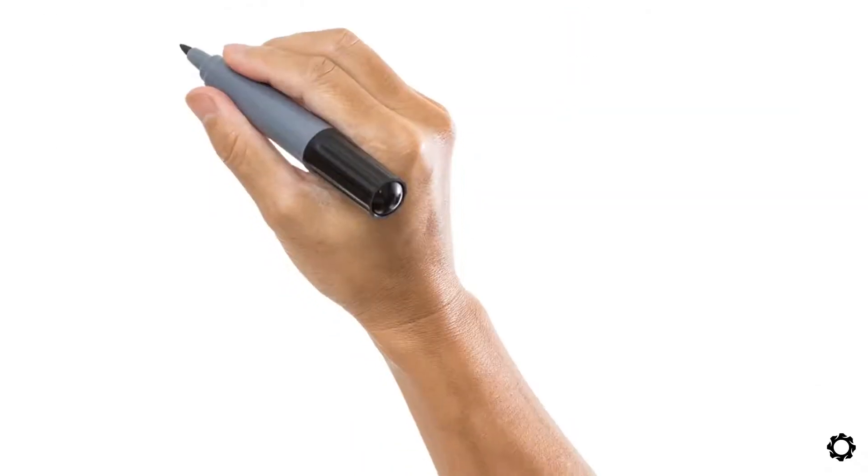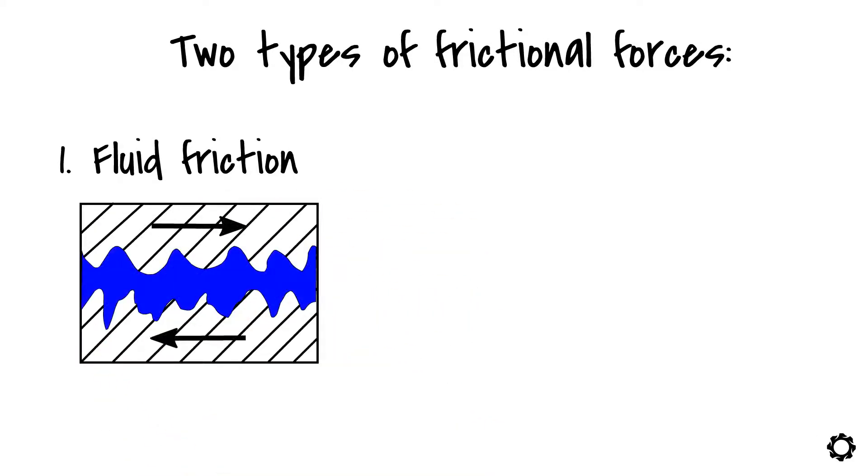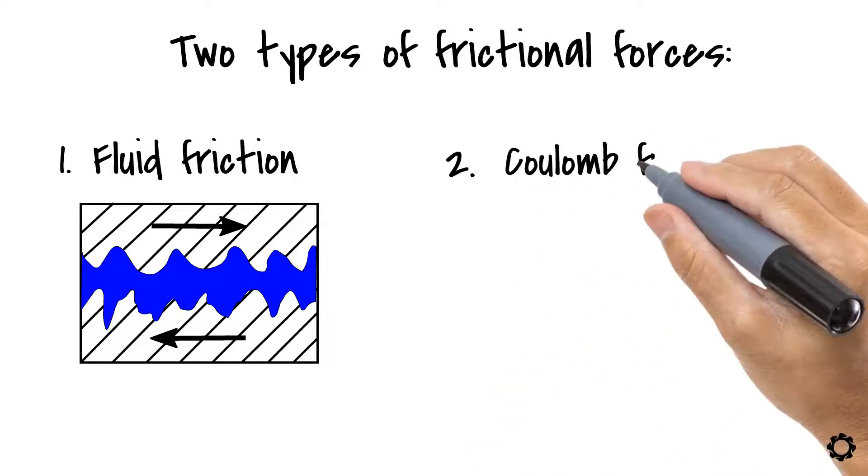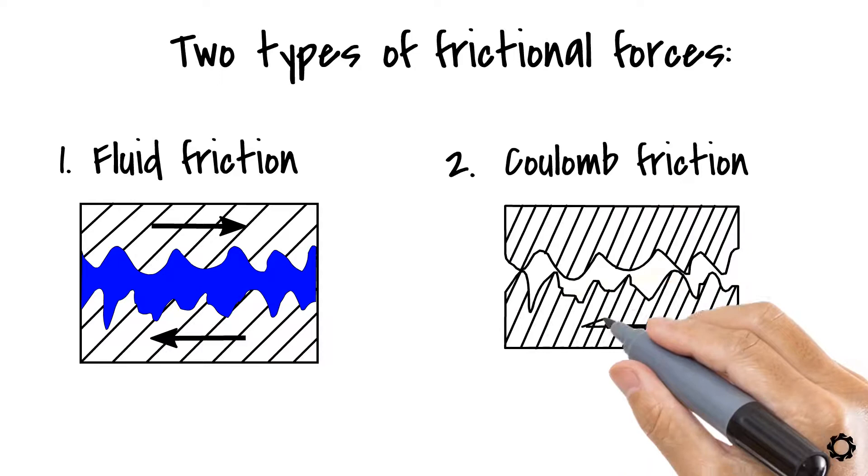There exist two types of frictional forces. One of them is fluid friction, which exists when the contact surfaces are separated by a layer of fluid or gas. And the other one is coulomb friction, which exists when the contact surfaces are in direct contact with each other.